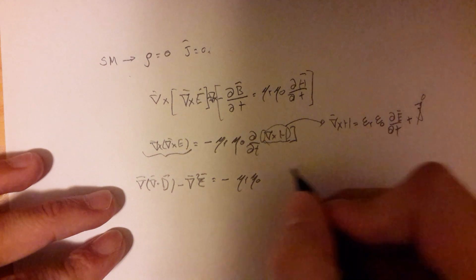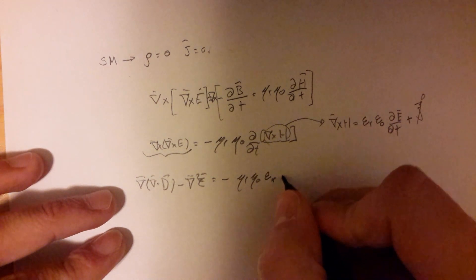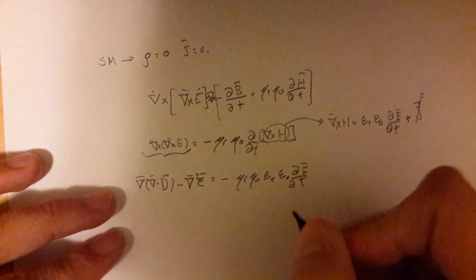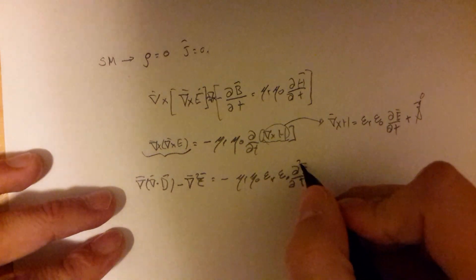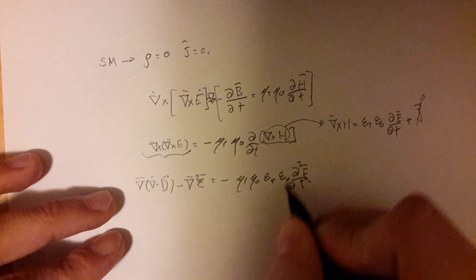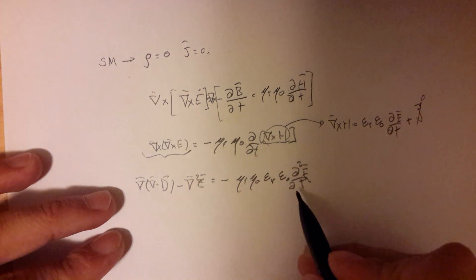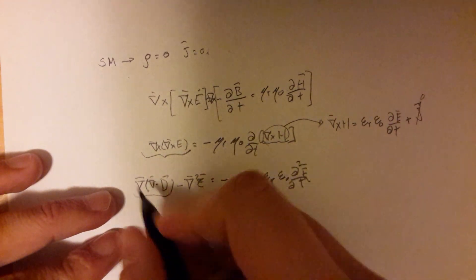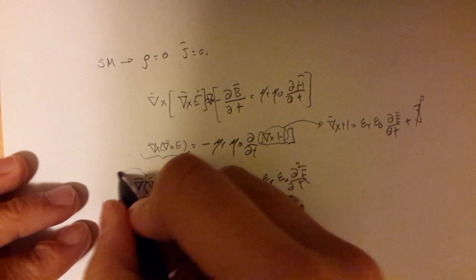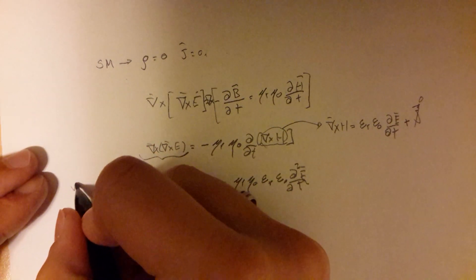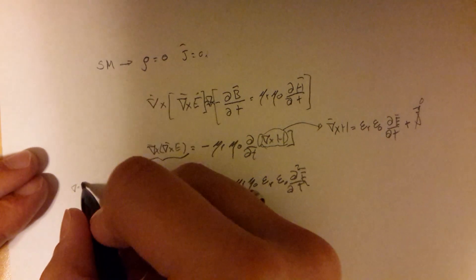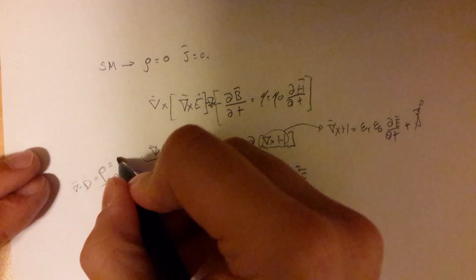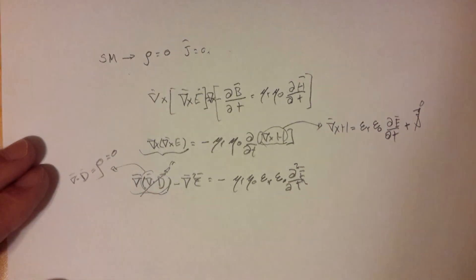We can substitute that in. For the other part of the expression, we recall another Maxwell's equation which says that the divergence of D equals the charge density. In our case, the charge density is zero, so this part of the expression is also zero.